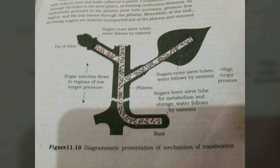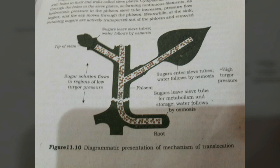Bulk movement of substances through the conducting or vascular tissues of a plant is called translocation. Higher plants have highly specialized vascular tissues — xylem and phloem. Xylem is associated with translocation of mainly water, minerals, some organic nitrogen, and hormones from roots to the aerial parts. The phloem translocates a variety of organic and inorganic solutes mainly from the leaves to other parts of the plant. Water is absorbed mainly by the roots — the root hairs present in millions at the tips of roots are thin-walled, slender extensions of epidermal cells that greatly increase the surface area for absorption.